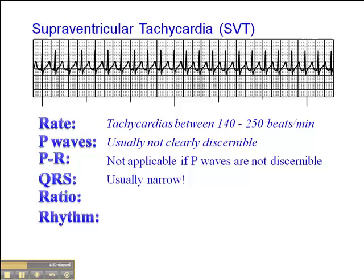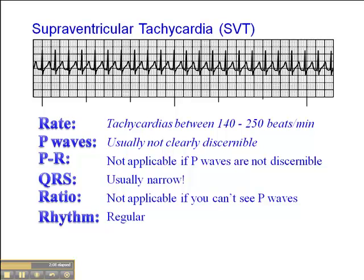With some exceptions in more advanced dysrhythmia interpretation, the easy, simple rule to remember is: narrow-complex, regular tachycardia without clearly discernible P-waves is SVT. If the QRS is wide, it's V-tach until proven otherwise. The P-to-QRS ratio is not applicable if we can't see P-waves, and the rhythm is regular — so this is not a compensatory rhythm. This is a dysrhythmia that has to be treated, and I'll talk about SVT treatments in another presentation.